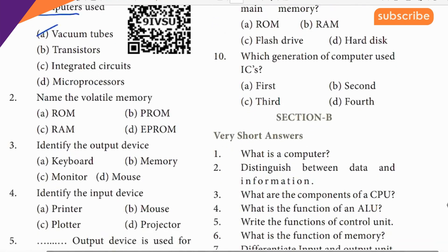Second question: name the volatile memory. The answer is RAM — RAM is one of the most well-known volatile memories.